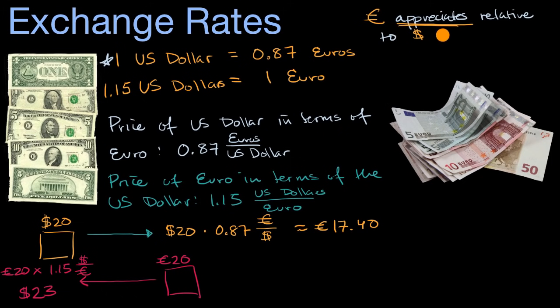One scenario where this is happening is if this was where you are starting, one euro would now be more US dollars, more than 1.15 US dollars. So one euro would now be equal to, maybe it's equal to a dollar 20 now, so it's now equal to one dollar 20 cents.